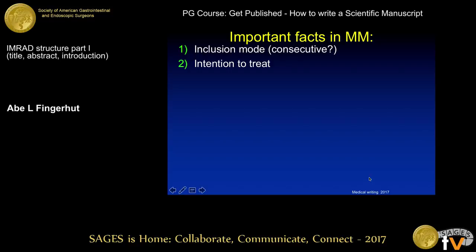Most important, of course, is intention to treat. When you do a randomized controlled trial, you have to analyze the patients as they were allocated by randomization, even if they did not get the treatment that they were supposed to. You can also do another analysis, which is per protocol — in other words, what they actually got — and compare the two to make sure that there's no bias from too many patients going out of the intention-to-treat protocol.